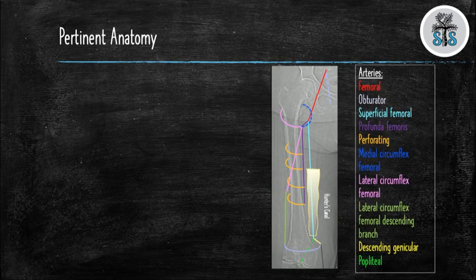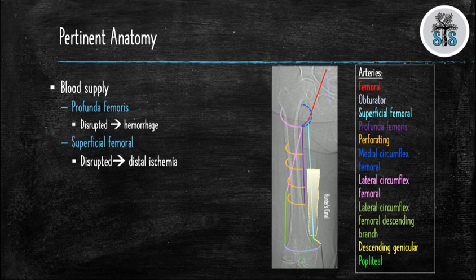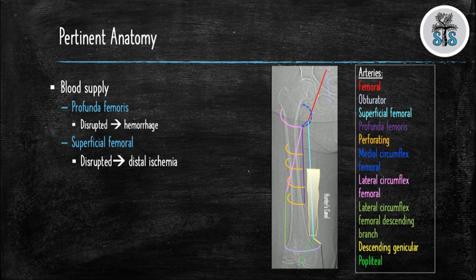There are two major arteries that supply the lower extremity. The femoral artery divides into the profunda femoris and the superficial femoral artery. The profunda femoris supplies the femoral shaft and surrounding musculature — disruption results in hemorrhage. If you disrupt the superficial femoral artery, this leads to distal ischemia, as this artery divides into the popliteal artery, which further divides into the anterior tibial artery and posterior tibial artery. The profunda femoris supplies the femoral shaft with perforating arteries, while the superficial femoral artery descends and enters the distal extremity as the popliteal artery.